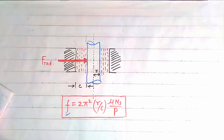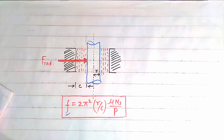We know that when the journal rotates, the fluid in immediate contact with the journal surface tries to oppose the motion of the journal and develops a frictional resistance. This frictional resistance can be found out using Petroff's equation.